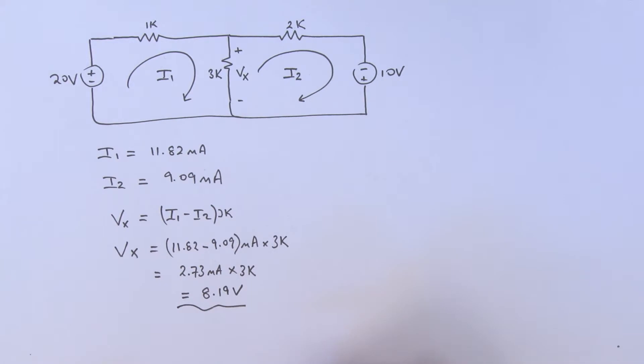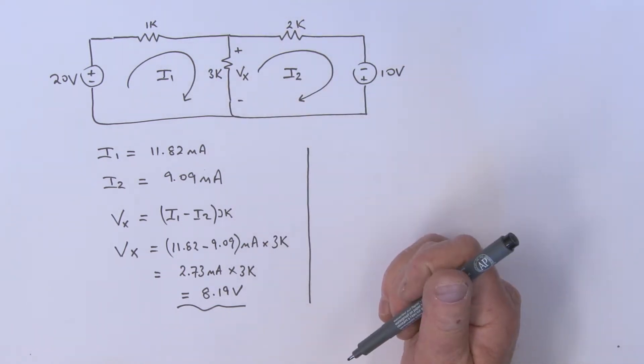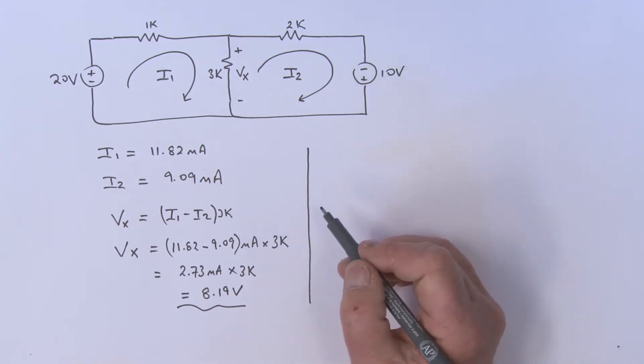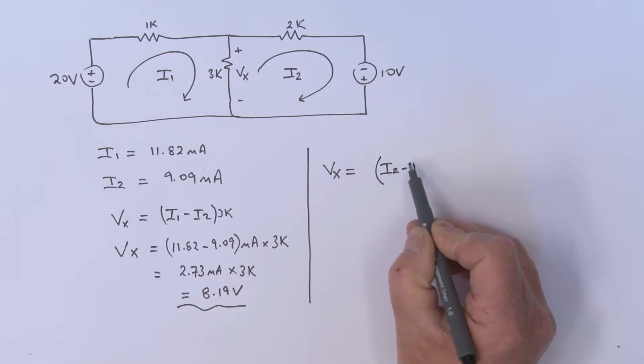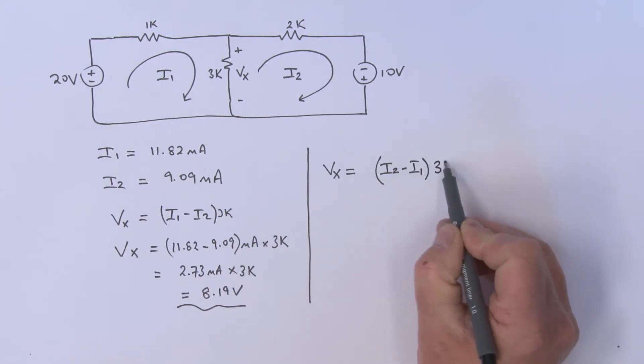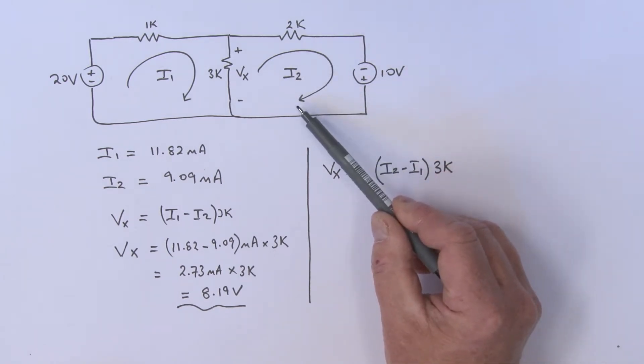All right, well what if I chose to use I2 minus I1? Should you not get the same value? Well, let's think about that. So let's think of calling this voltage Vx. We could say Vx equals, opening up a bracket, I2 minus I1 multiplied by that 3k. But because I've chosen I2 as the lead current, am I not changing the defined direction of that voltage?